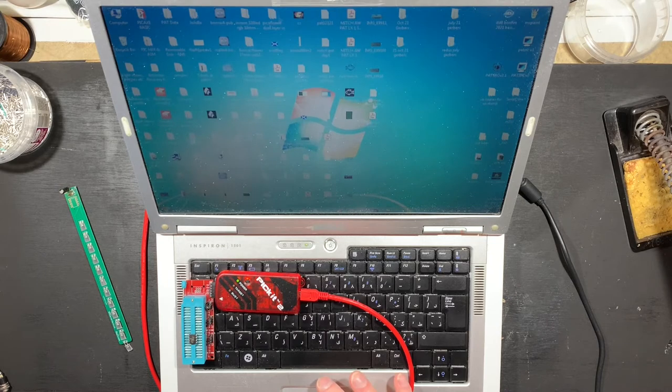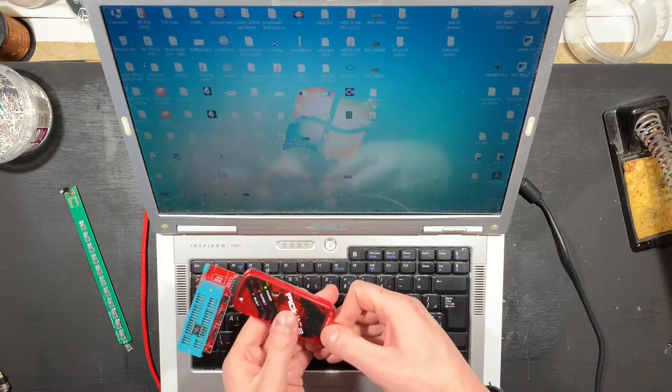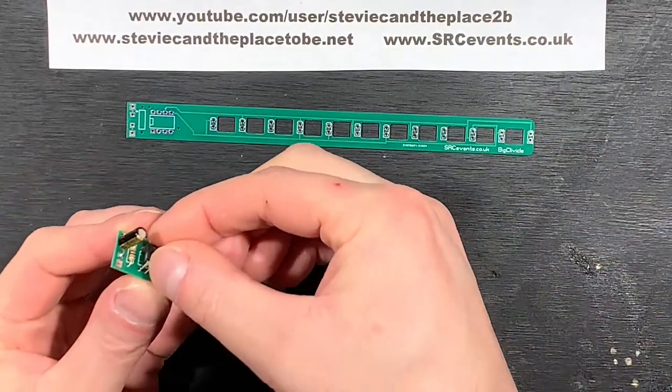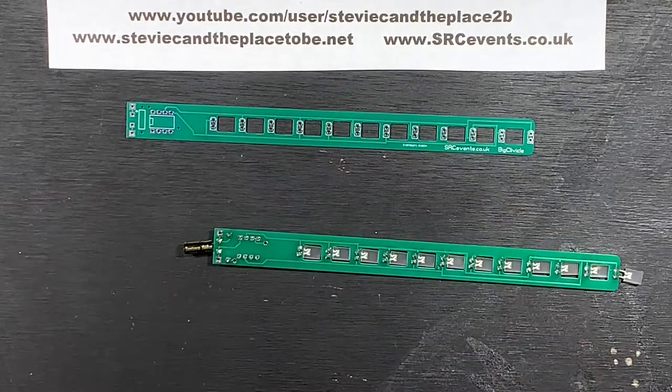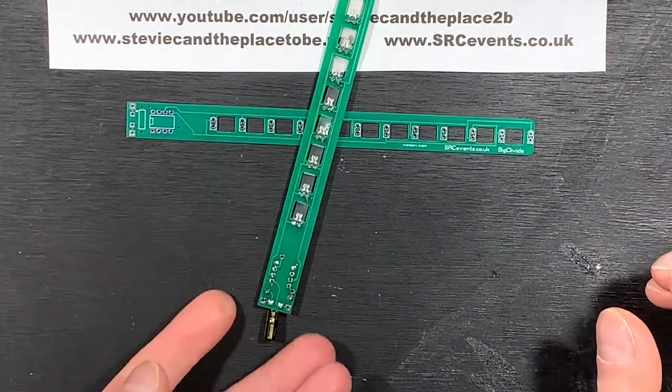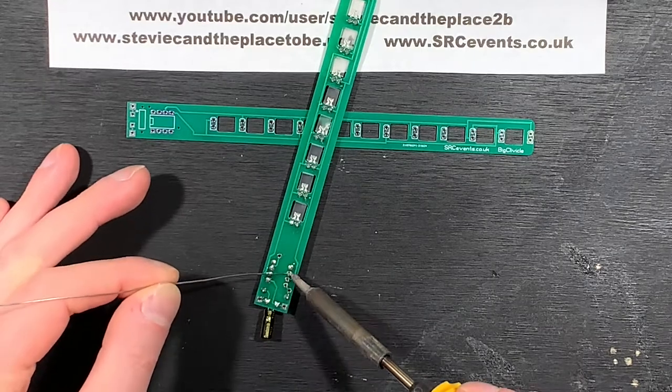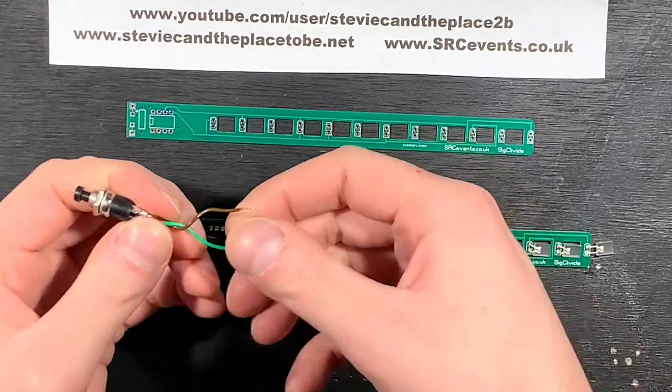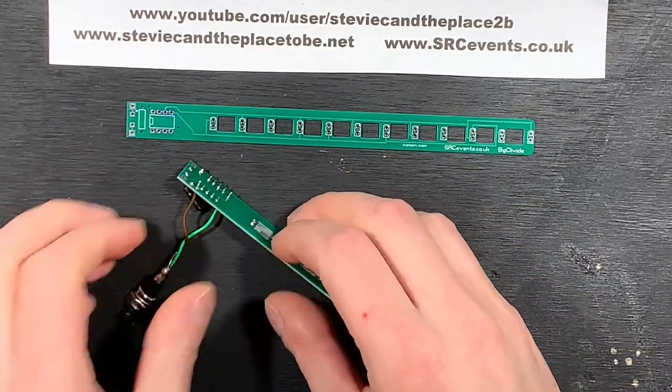I can now eject the chip and solder it into the PCB. I'm also going to solder in this push-to-make switch to allow me to jump through the various light sequences in the software.